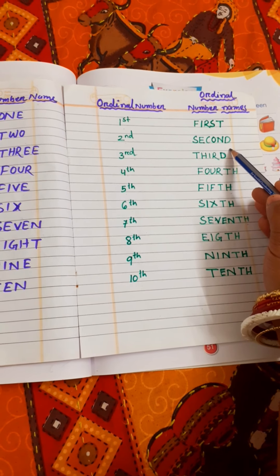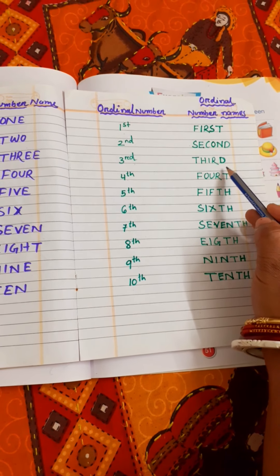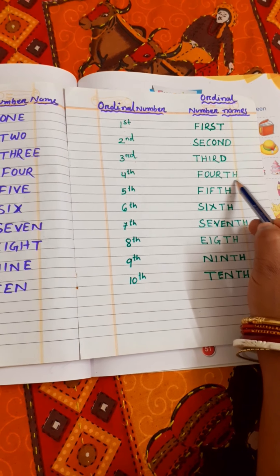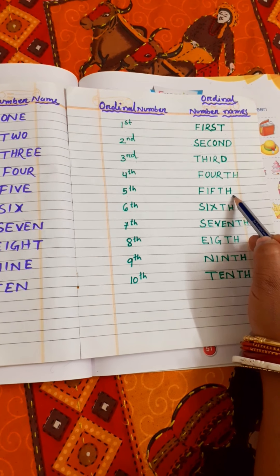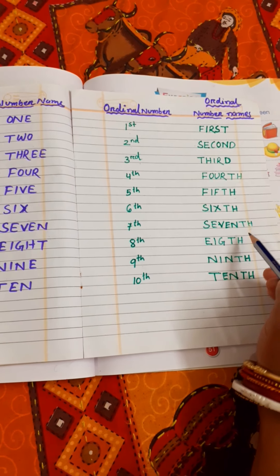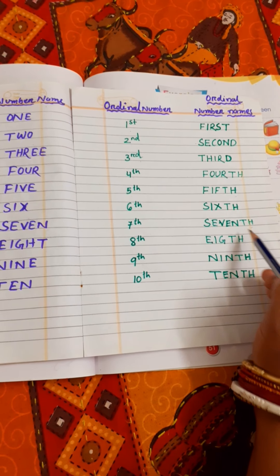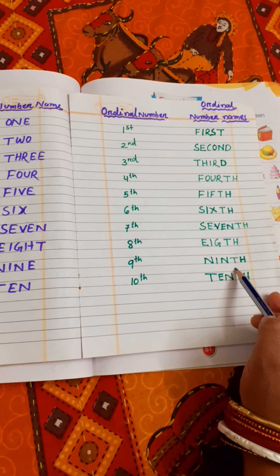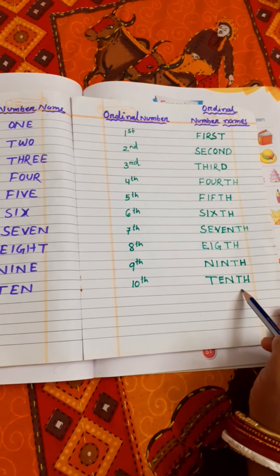The ordinal number abbreviations are: 2nd, 3rd, 4th, 5th, 6th, 7th, 8th, 9th, 10th.